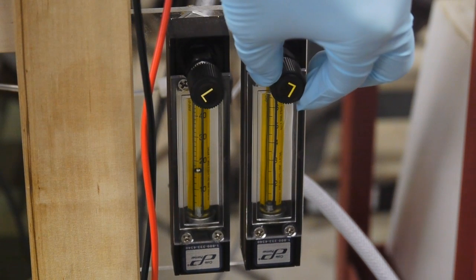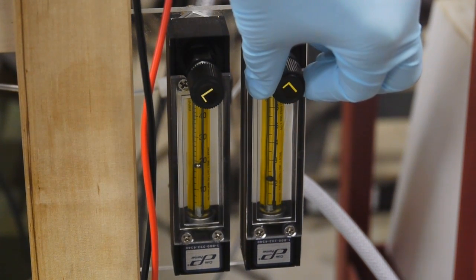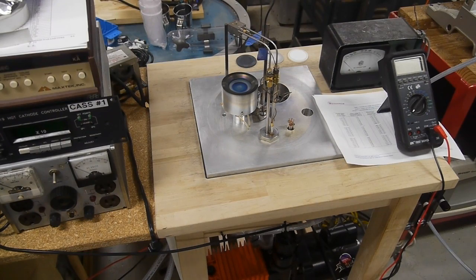In order to start reactively sputtering, we need to start adding oxygen to the chamber. And the amount that we add is very critical and controlling it is pretty difficult. So if we add too much oxygen to the chamber, that skin of titanium oxide will form on the target and the sputtering process will slow down or almost stop. If there's too little oxygen in the chamber, then we aren't going to be reactively sputtering. We're just going to be getting fresh titanium metal onto the slide.